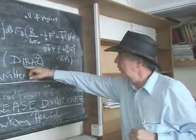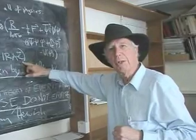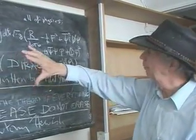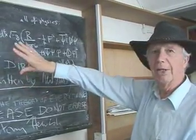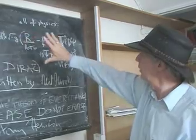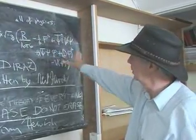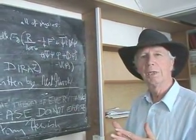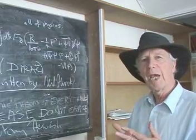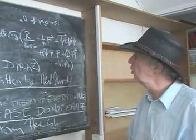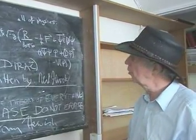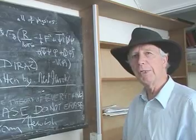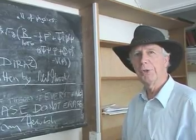Paul Dirac, a fellow of Trinity College Cambridge, thought about this and wrote this equation, which unifies these two. And it's magical because it did that, but it had properties which he never understood.